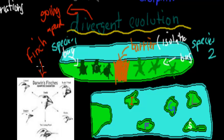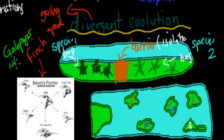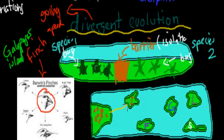The real-life example is Darwin's finches — what Darwin himself observed, and one of the reasons he came to believe in evolution. He went to the Galapagos Islands. The most common was the seed-eating mainland finch, but some birds left and flew to other islands.